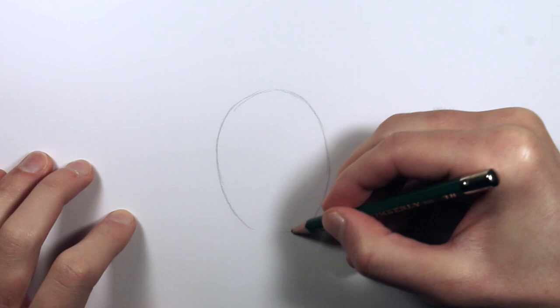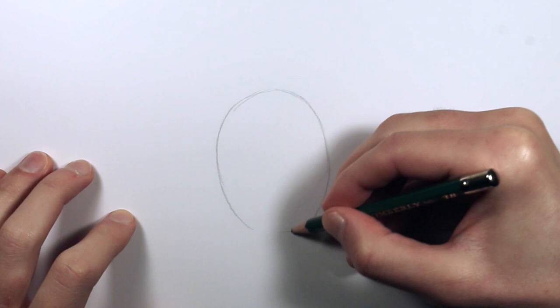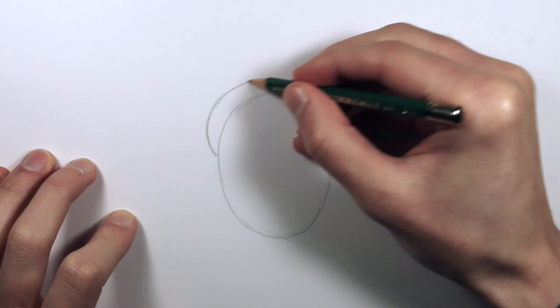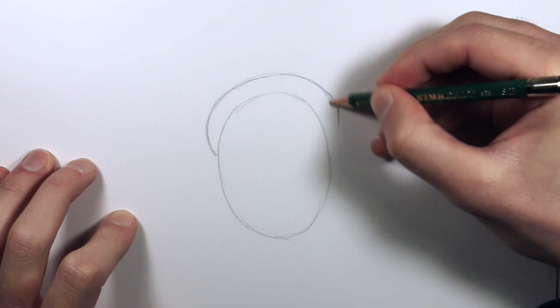We're going to draw an acorn shape like this, or you can think of it as an egg. And then we're going to add its hat, the part on top, the little cap. It just curves around and goes above it a little bit and tucks in.